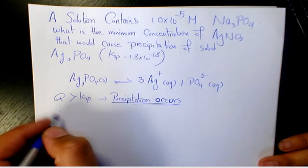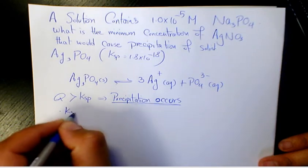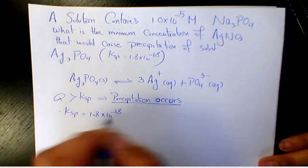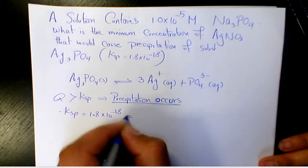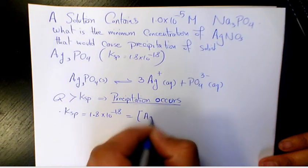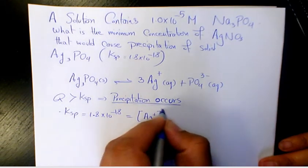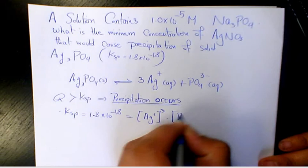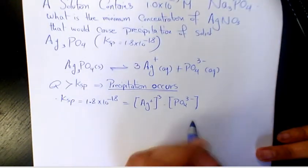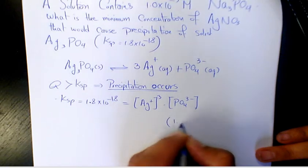So it means that Ksp equals 1.8 times 10 to the power of negative 18, which equals [Ag+]^3 times [PO4 3-]. The concentration of phosphate is given, which is 1.0 times 10 to the power of negative 5.